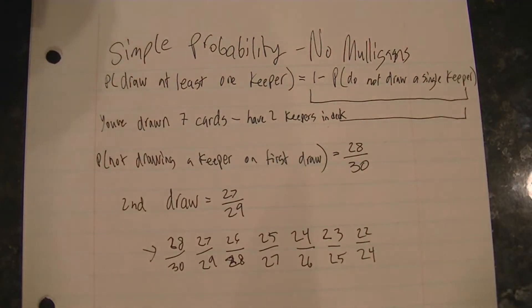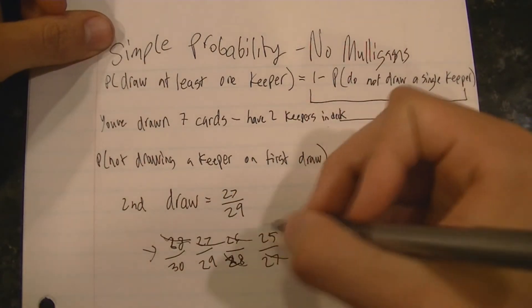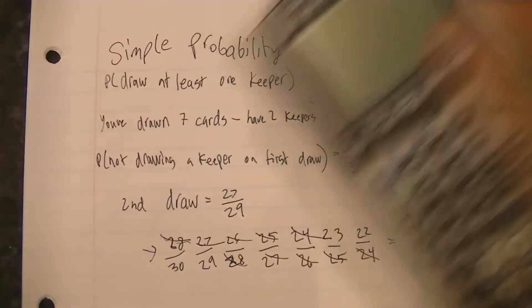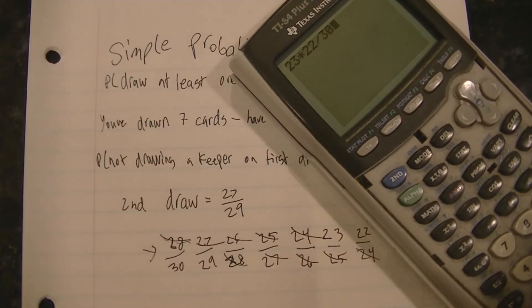And you can calculate the probability of each of the seven events occurring where each event is you not drawing a Keeper, and if you multiply each event together you get the overall probability of not drawing a Keeper in any of those seven draws.